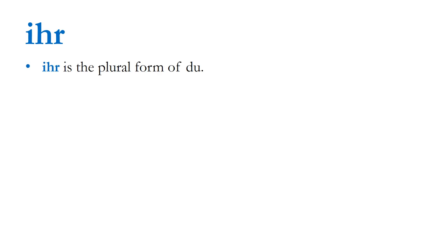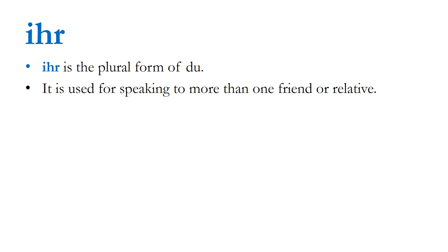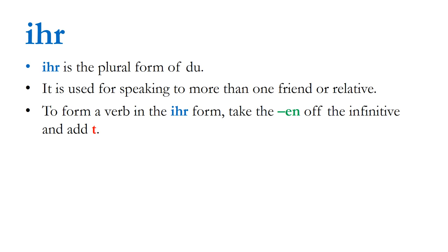Today we are going to be focusing on ihr, which is the plural form of du. It's used for speaking to more than one friend or relative - for instance, a group of your cousins. To form a verb in the ihr form we have to take the -en off the infinitive and add a -t. An example might be spielen, translated as 'to play', or gehen, 'to go', essen, 'to eat', tragen, 'to wear'.